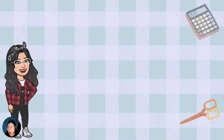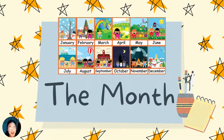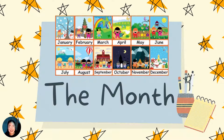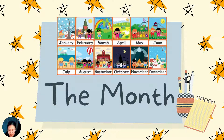Again, we will talk about the month. We have here — can you read it with me? We have January, February, March, April, May, June, July, August, September, October, November, and December.